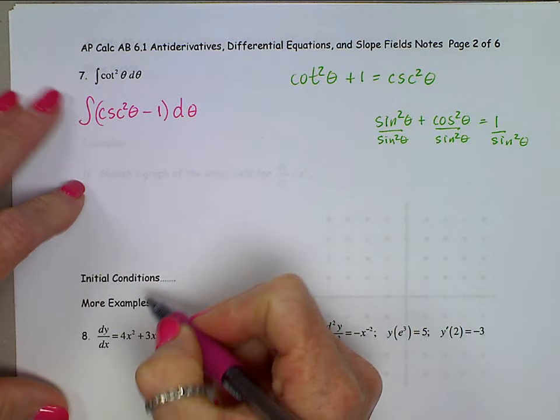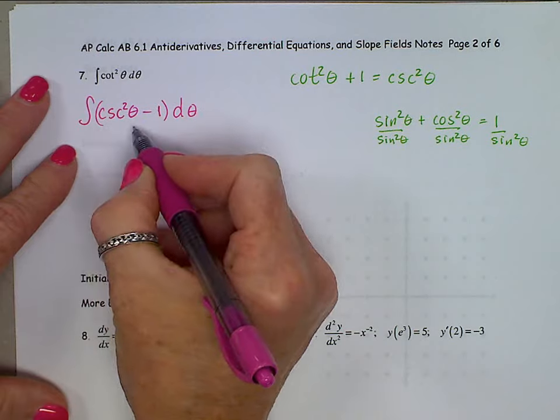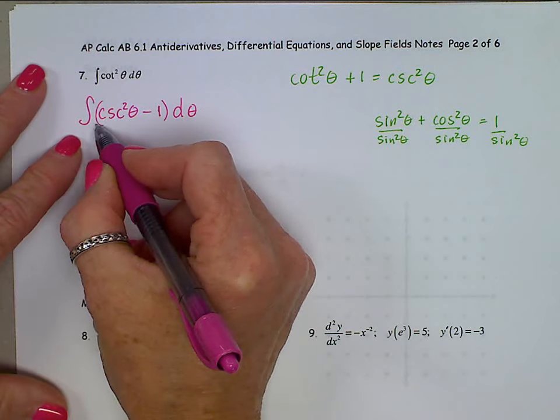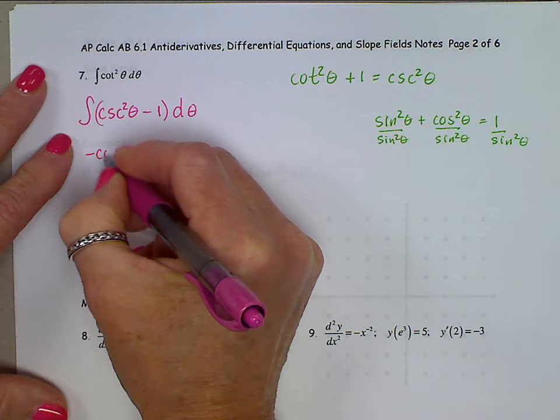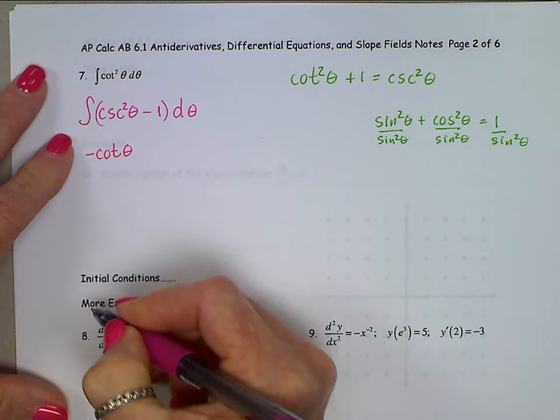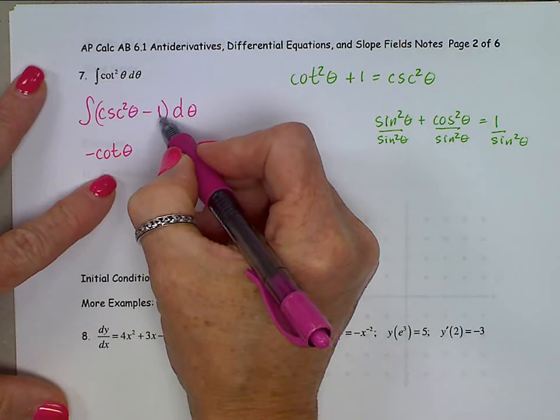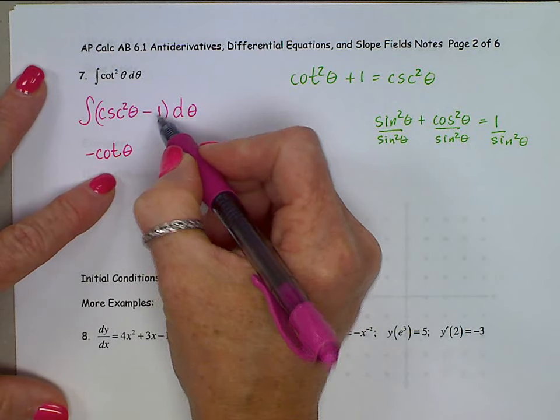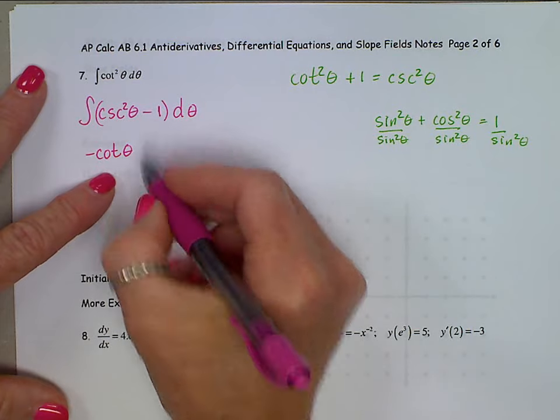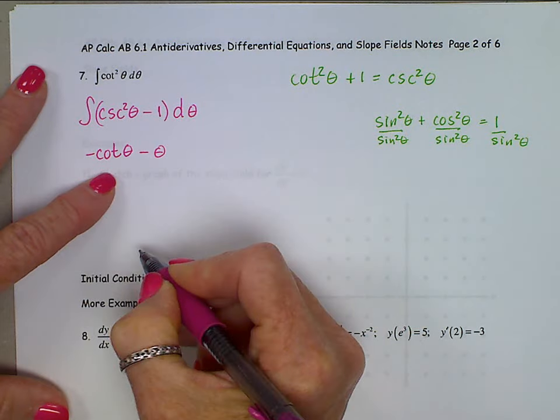And we do the anti-derivative of each piece. What thing, when you take the derivative of it, gives you cosecant squared? Well, that's negative cotangent theta. And the anti-derivative of a 1, many of you will want to just slap down an x, be very careful. Our variable here is a theta, so this is minus theta and then plus a c.